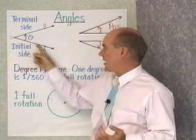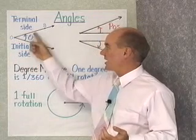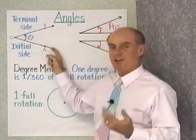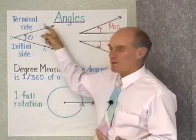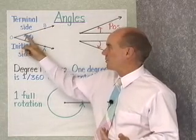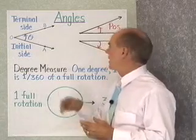This side right here, OA, I call the initial side, and this side, OB, is the terminal side. I can think of OA as being rotated up around into OB, and that's what forms this angle θ.